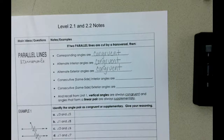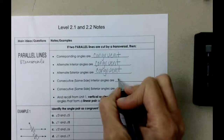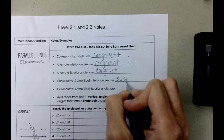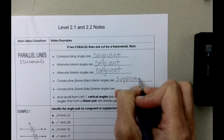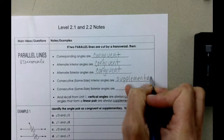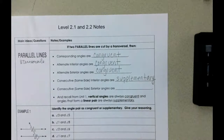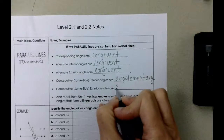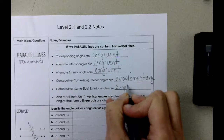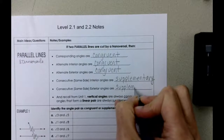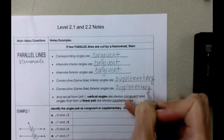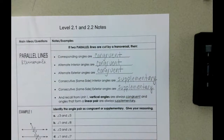Consecutive or same-side interior angles are going to be supplementary. And the same thing happens with consecutive same-side exterior angles — they are also supplementary. Remember that supplementary means that they add to be 180 degrees.